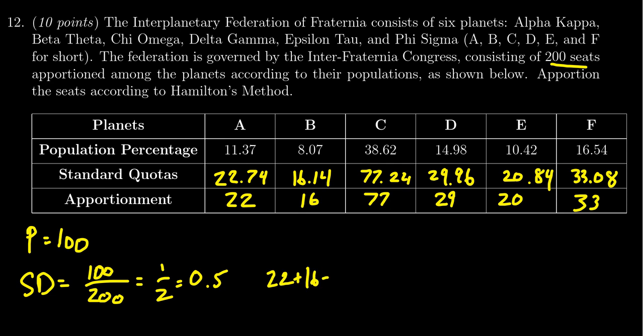That's three short, so we have a surplus of three, so we need to figure out who's the most deserving amongst them. Looking at the residues, the biggest residue would be 0.96, so we're going to bump state D up to 30 seats. Next, the next biggest residue would be 0.84, so E is going to get upgraded to 21. And then finally, the next biggest residue is going to be 0.74 for state A, so we're going to give the last remaining seat to state A, giving 23.